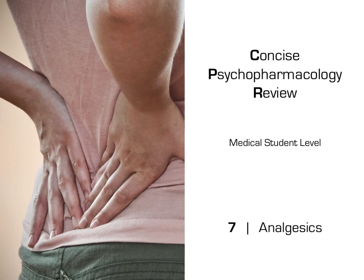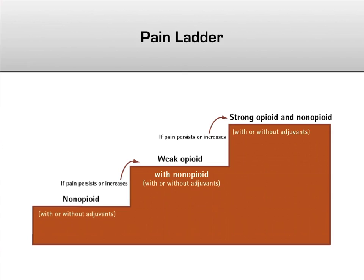We'll start with analgesics, commonly known as painkillers. This is a broad category covering everything from aspirin and Tylenol to Vicodin and Dilaudid. When going over the pharmacology of pain management, it is helpful to keep in mind the overall theme of using the least powerful option that still produces good results. The World Health Organization has created a pain ladder, which suggests starting with non-opioids such as NSAIDs, then combining NSAIDs with a weak opioid, and finally introducing a strong opioid.